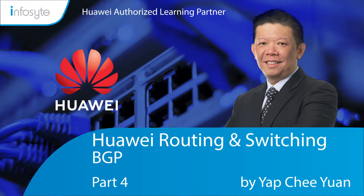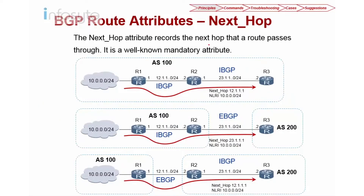Welcome back to hallway routing and switching elite training for HCIE. Today's topic we are going to discuss is BGP. Let's start part four. Next we are going to look into the next hop attribute. The next hop attribute records the next hop of the route and this is a well-known mandatory attribute. In other words, all BGP routers have to support it and they have to advertise this in their update.